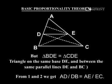But triangle BDE equals triangle CDE, triangles on the same base DE and between the same parallel lines DE and BC. From equations 1 and 2, we get AD/DB = AE/EC.